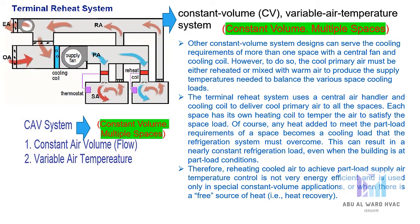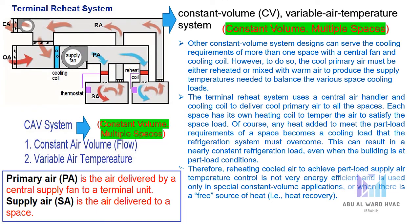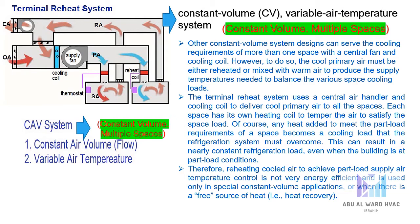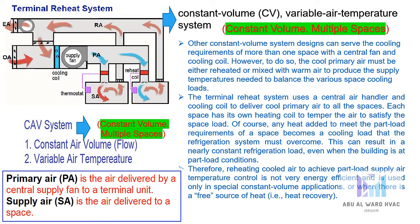Any heat added to meet the part load requirements of a space becomes a cooling load that the refrigeration system must overcome, resulting in a nearly constant refrigeration load even when the building is at part load conditions. Therefore, reheating cooled air is not very energy efficient and is used only in special constant volume applications or when there is a free source of heat, such as heat recovery. In this system, we have primary air (PA), which is the air delivered by a central supply fan to a terminal unit, and supply air, which is the air delivered to the space — making it a two-stage process compared to a single-stage normal CAV.